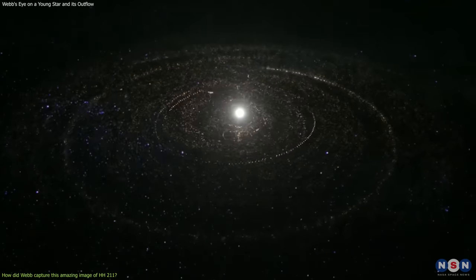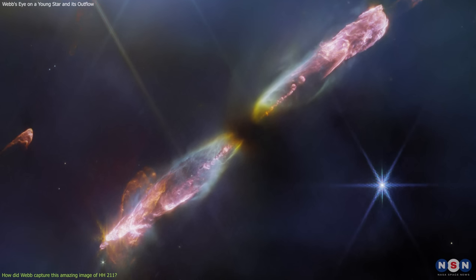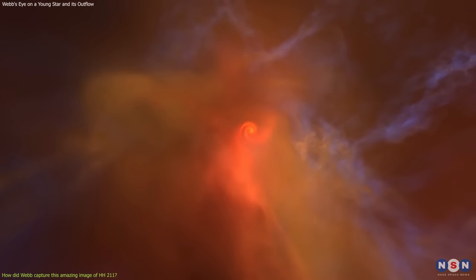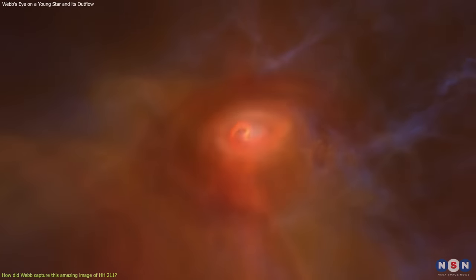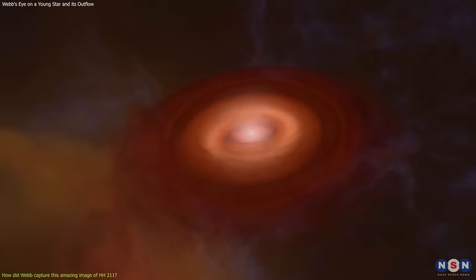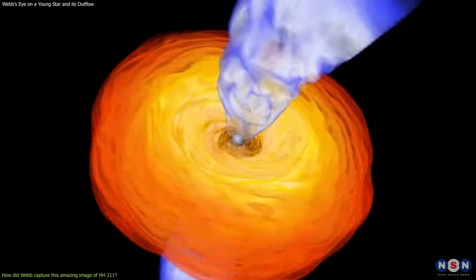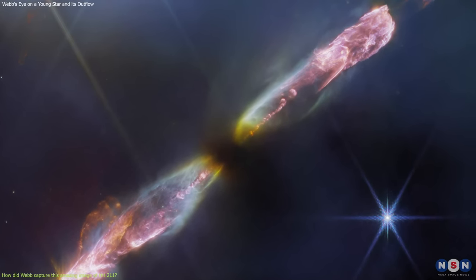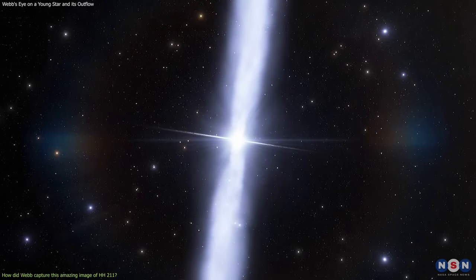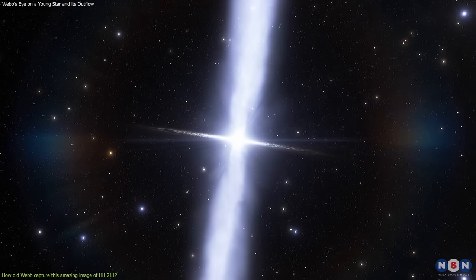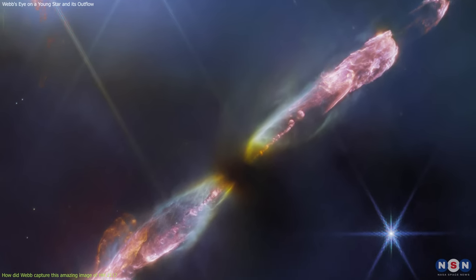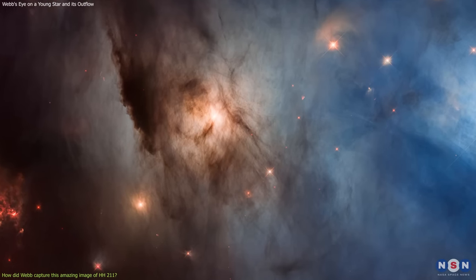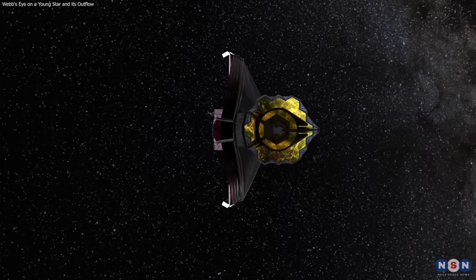This is also important for understanding how stars form and evolve in general. They provide new insights into the physics of jets and bow shocks, which are common features of young stars. They also provide new constraints for testing and improving existing theories and models of star formation and outflow physics. Some of these theories and models include magnetohydrodynamic simulations, shock chemistry models, radiative transfer codes, and synthetic observations. These findings are not final or definitive, however. They raise new questions and challenges for further research on this topic. Some of these questions include: How does this star compare with other young stars with similar or different outflows? How does it fit into the larger picture of star formation in Perseus? How can Webb improve its observations of this star with other instruments or modes?